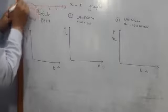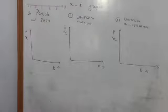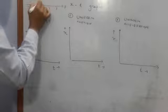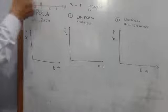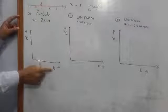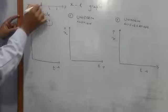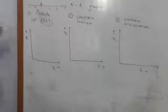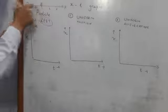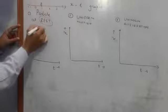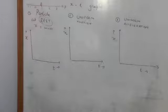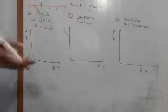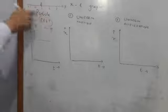Suppose there is a particle resting on this line at some position. Since it is at rest, it will not show any motion. Whatever the value of time — after 1 second, 2 seconds, 3 seconds — since it is at rest, it will always be at x equal to 1. So the value of x for this particle is always 1; it is not changing. That means x is equal to a constant.